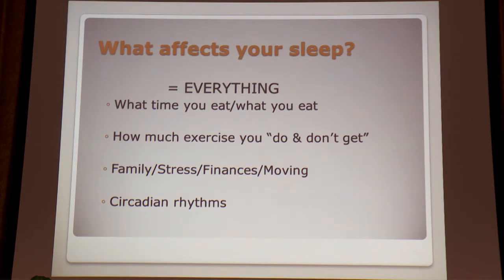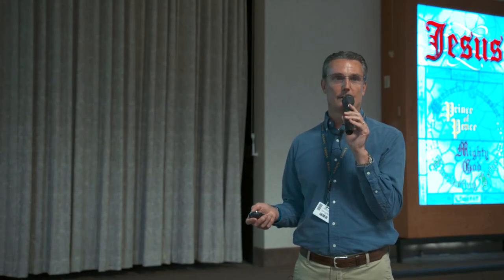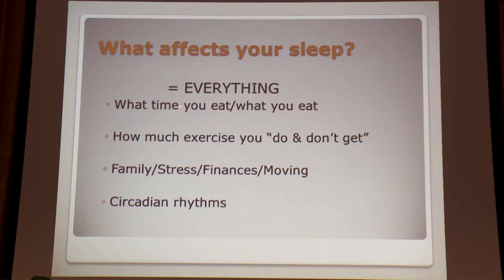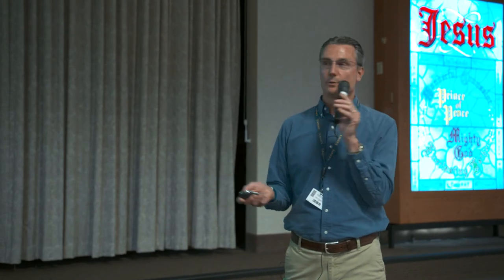What affects your sleep? Everything. What time you eat — don't eat spicy pizza at 10 o'clock and go to bed at 10:15. Exercise — how much you do or don't get. Family, stress, finances, moving — all affect sleep. And your circadian rhythms: teenagers want to go to bed at midnight and get up at 10, not go to bed at 8 for a 5:30 school start. Everyone knows that's not their fault — that's just the way they are.